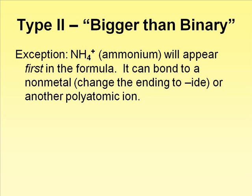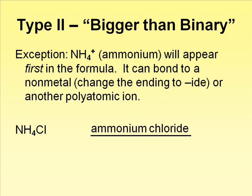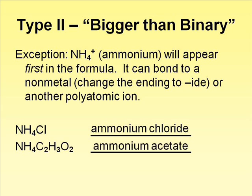There is one important exception with Type 2 compounds. This applies to compounds that contain the ammonium ion. Since ammonium is the only common polyatomic ion that has a positive charge, it will come first in the compound. It can bond to a non-metallic element or it can bond to another polyatomic ion. In this example, ammonium is bonding to a chlorine atom. In this case, we will revert to changing the ending to -ide. The name of this compound is ammonium chloride. In the next example, ammonium is bonded to another polyatomic ion. In this case, the name is ammonium acetate with no ending change.